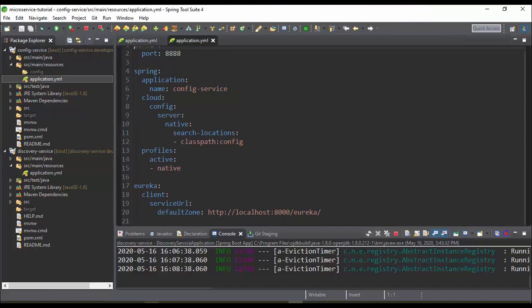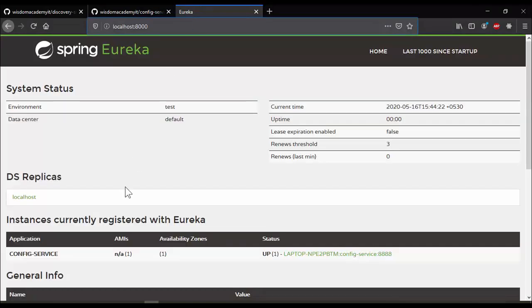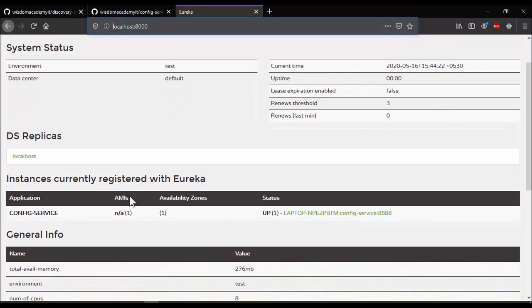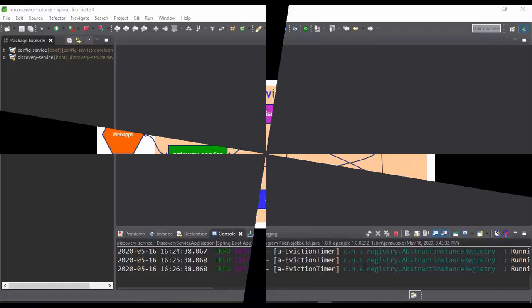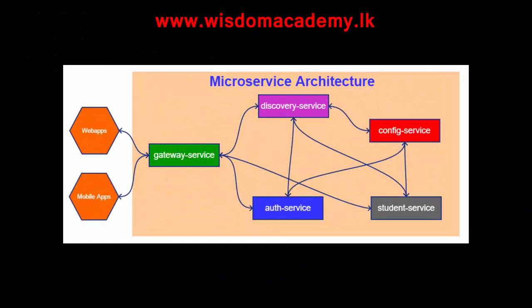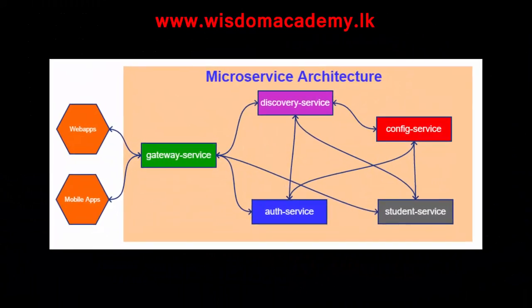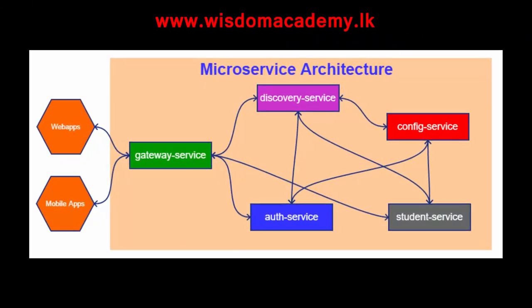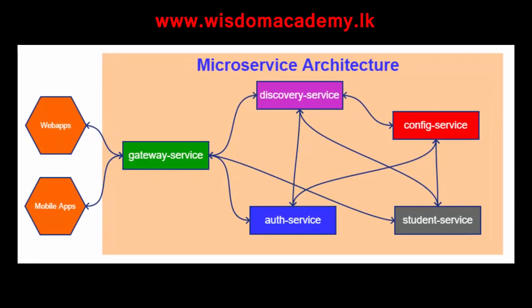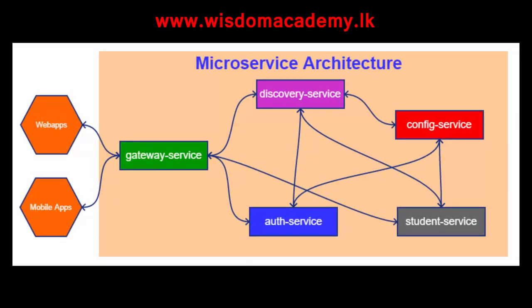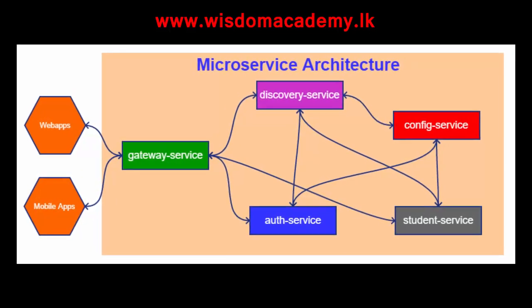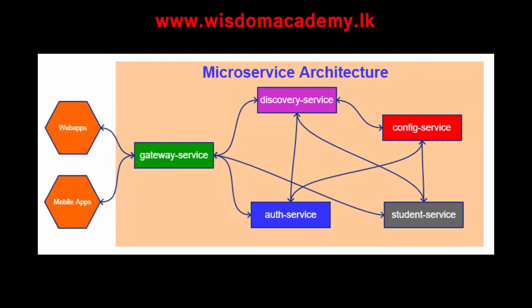You can see Config Service registered in Eureka Server. If you are a beginner to this series, please go through the previous videos and check out source codes from the GitHub repository. This is the architecture we are going to develop throughout this video series. Let's stop all the running services and start development.